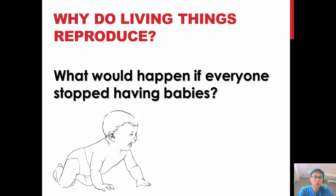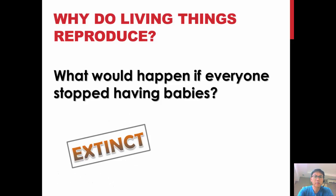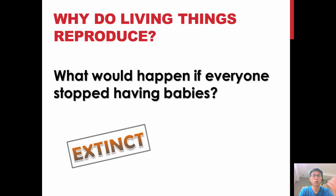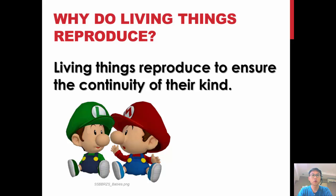What do you think would happen if everyone stopped having babies? That's right — if everyone stopped having babies, there won't be any more human beings left eventually, and we would become what we call extinct. So the key concept is: living things reproduce to ensure the continuity of their kind.